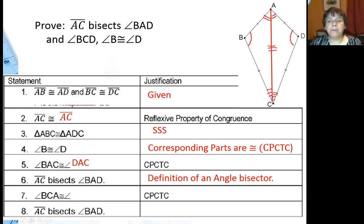Now looking at the bottom part of our kite, I could say these two angles are congruent, because the corresponding parts of congruent triangles are congruent. And I can also tell you that AC bisects, and that should be BCD, by definition of an angle bisector.